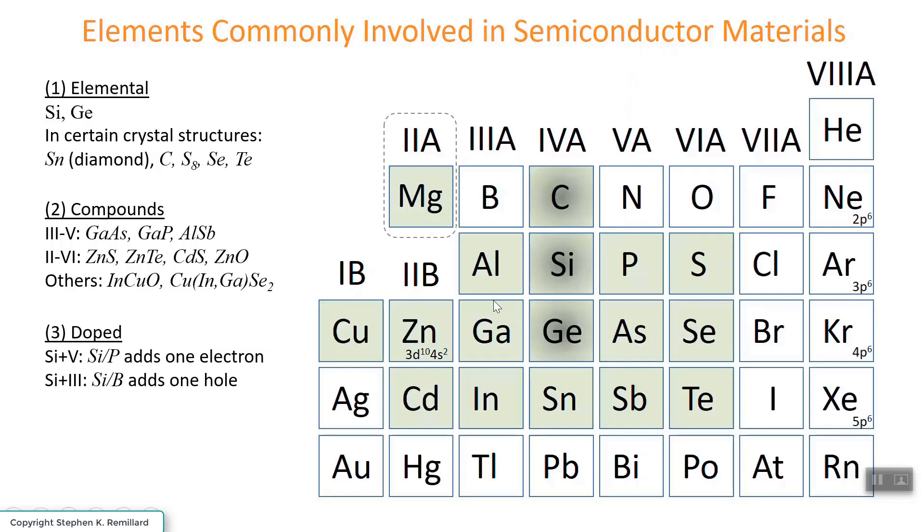Likewise if you dope silicon with boron, you take away an electron, because boron has one less electron than silicon. Boron will absorb, or accept, an electron.